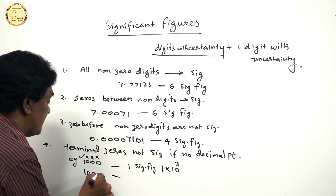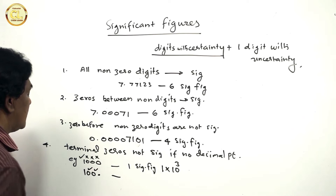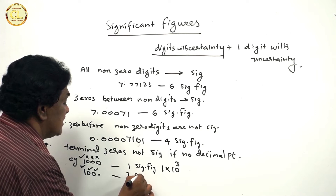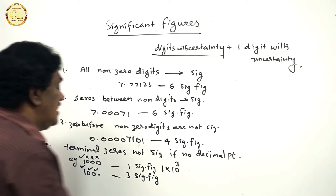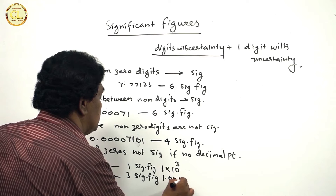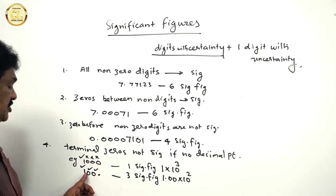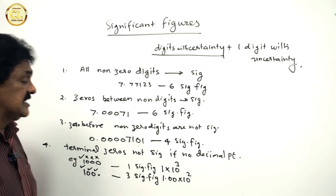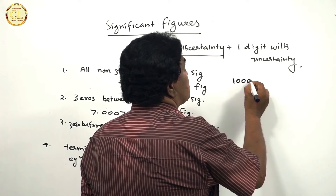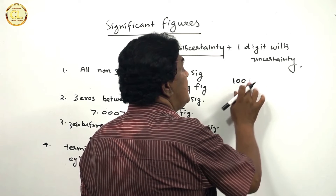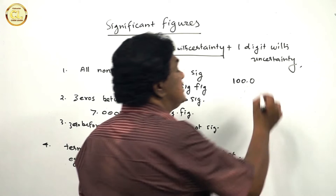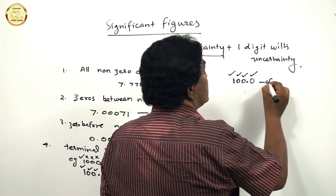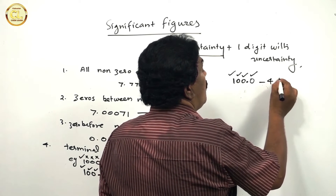If the scientific notation is 1.0 × 10², there are two significant figures. And 300.0 — in this case there is a decimal point, so this zero and this zero and 1 are significant. There are four significant figures, and it can be expressed in scientific notation as 1.00 × 10².